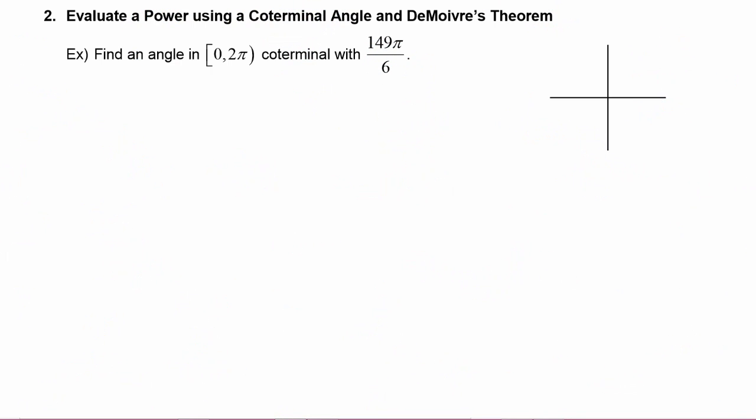First, let's do a little bit of review with this example, where you have to find an angle in the interval zero to two pi coterminal with 149π over six.